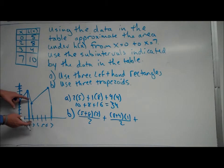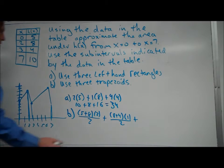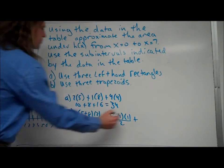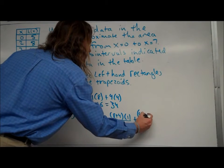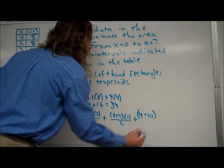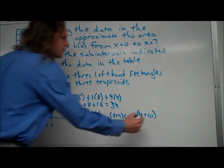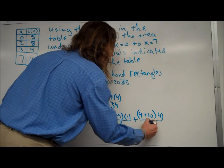And for my last one, at 3, the height is 4. At 7, the height is 10. So let's see here. 3, the height is 4. 7, the height is 10. So those are the bases. That's base 1 and base 2. The distance between the bases is 4. And I'm going to go ahead and divide that by 2.